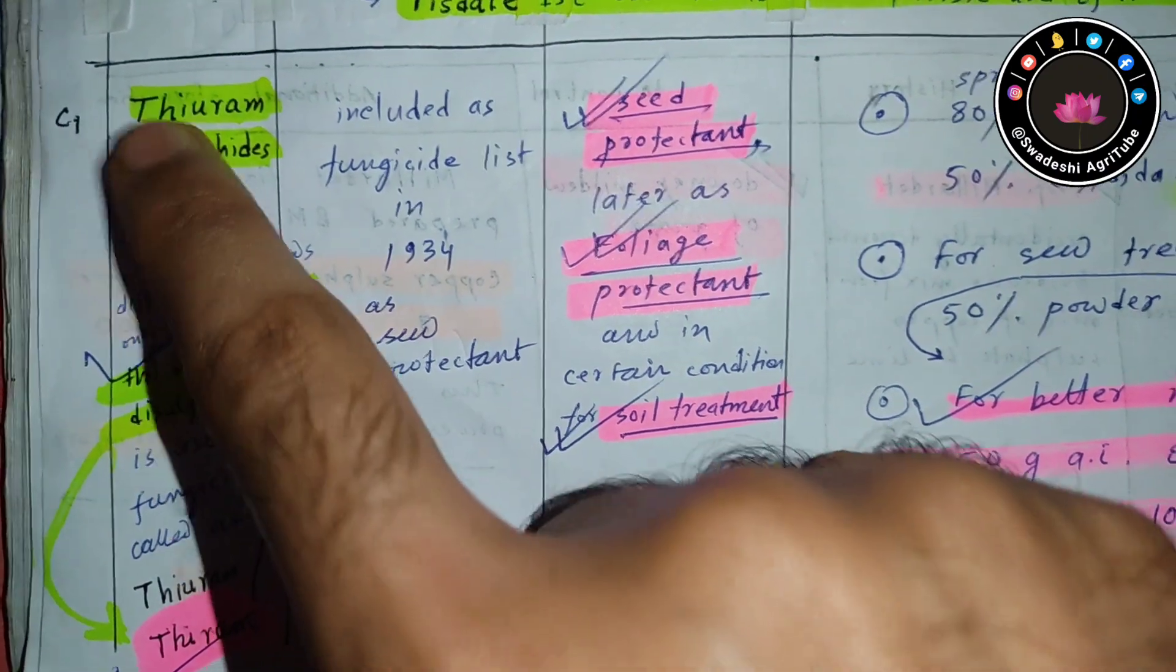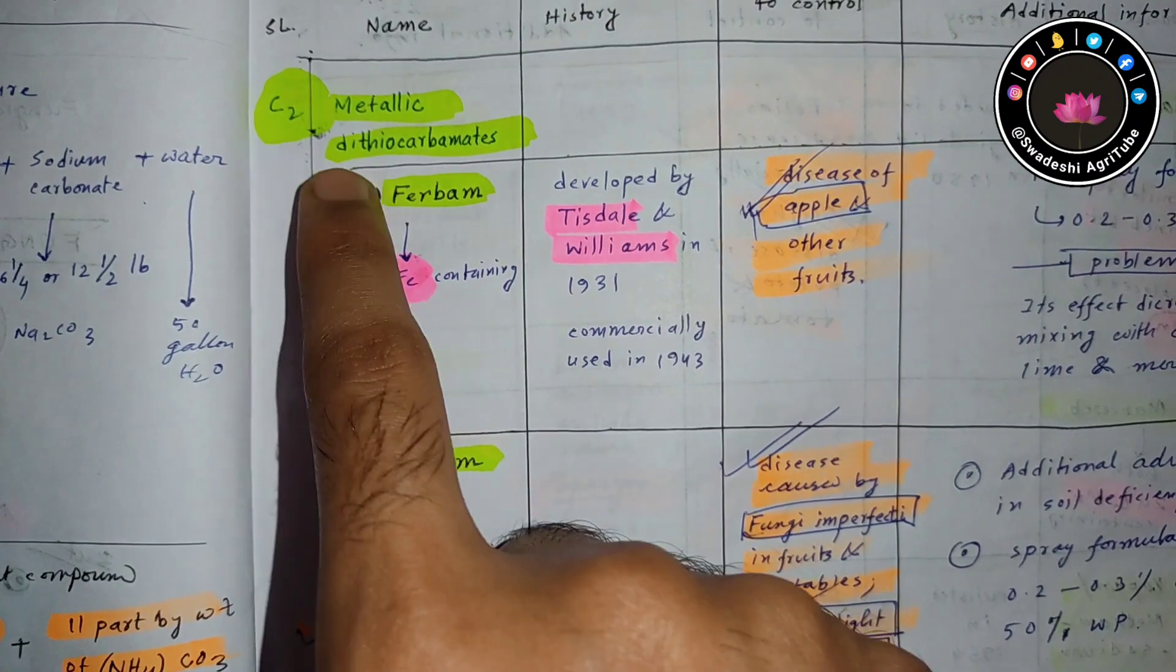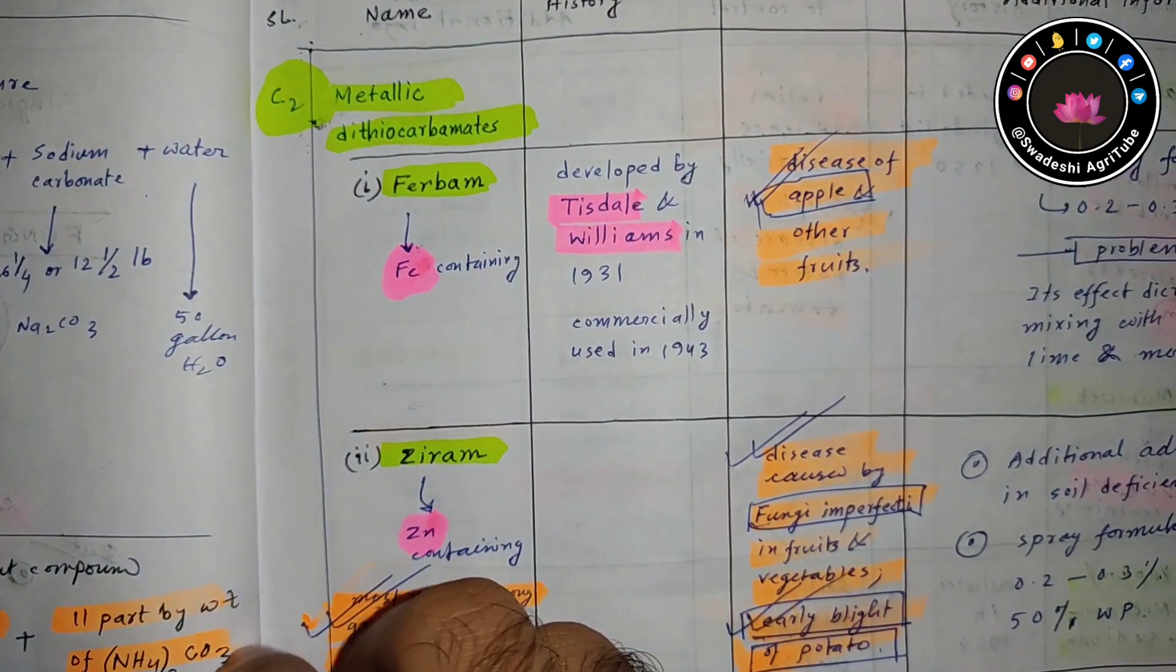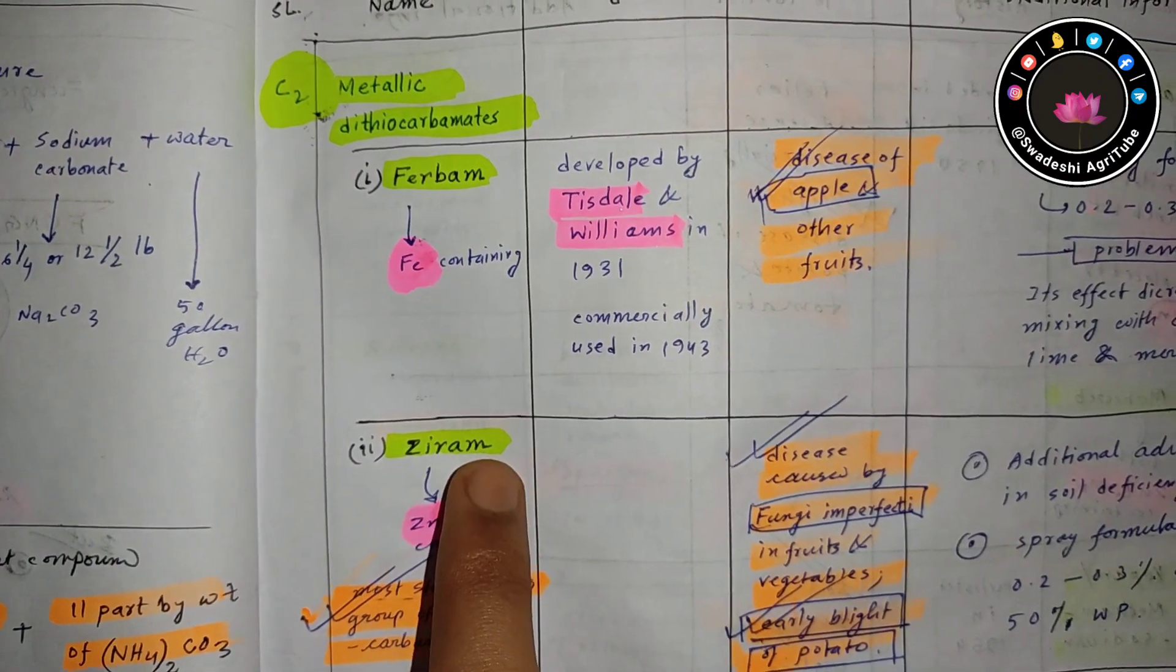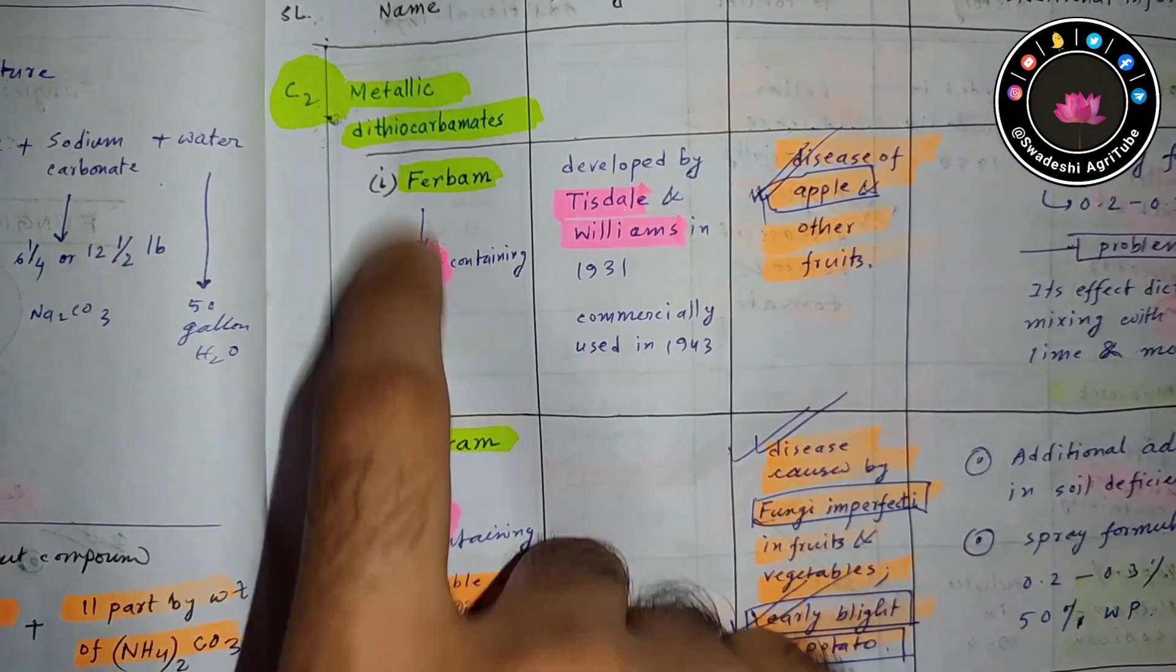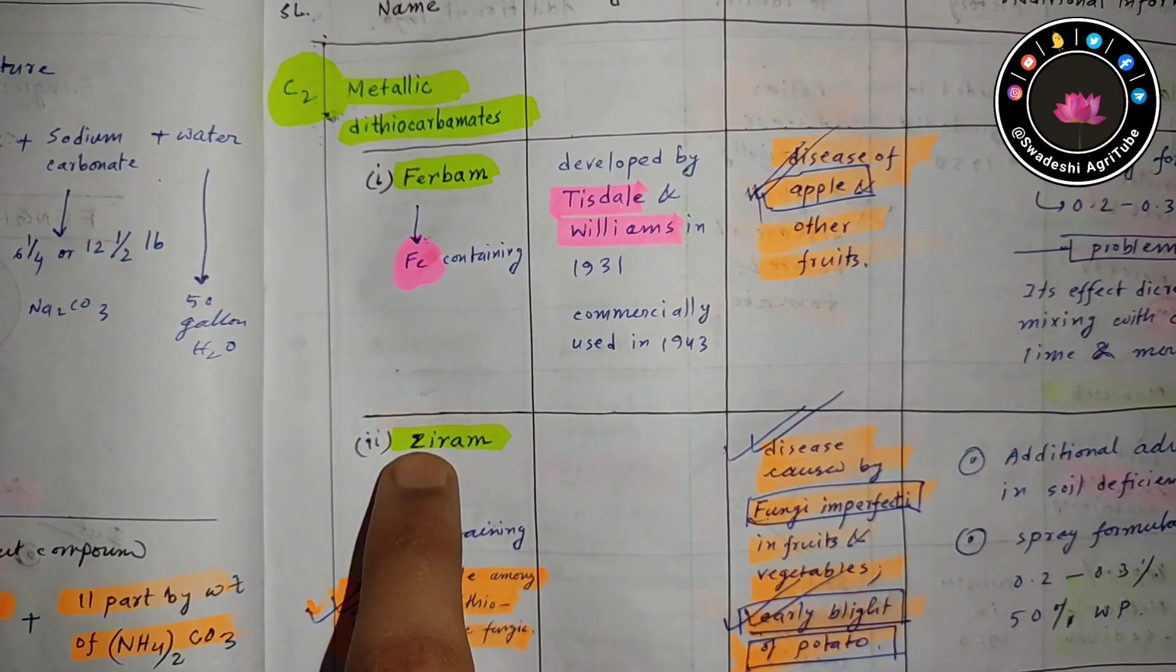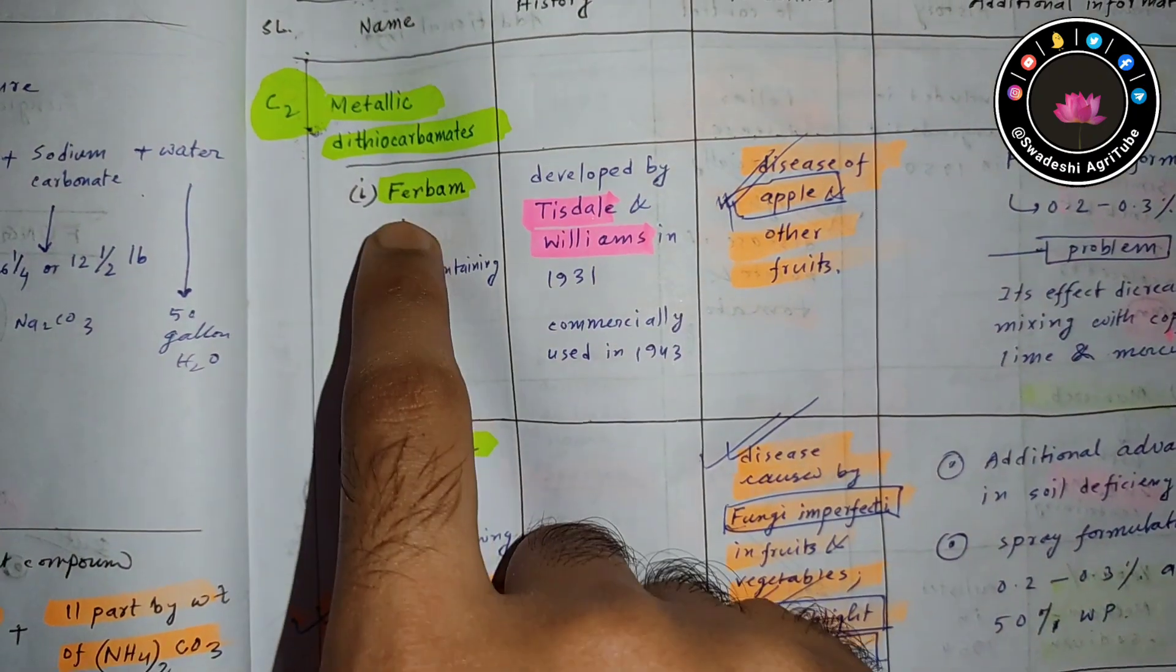For metallic diethiocarbamate, there are two major important fungicides: ferbam and ziram. Ferbam contains Fe, you can see from the name, and ziram contains zinc.